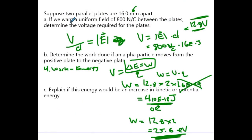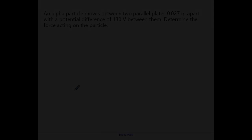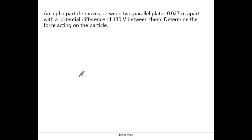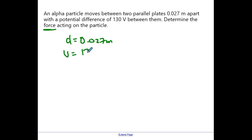Let's try another one. This is an alpha particle moving between two parallel plates that are 2.7 centimeters apart, and we have a potential difference — I'm asking for the amount of force acting on it. Our variables: distance is 0.027 meters, voltage is 130 volts, and we're being asked to solve for force. Do we have a formula that directly relates these? The answer is no — this is a good example of how we need to start putting big picture physics principles together and merging formulas.